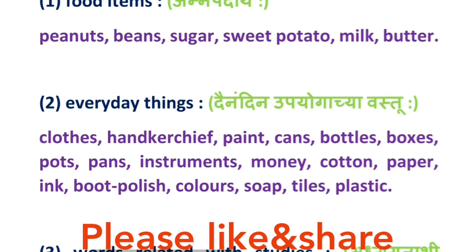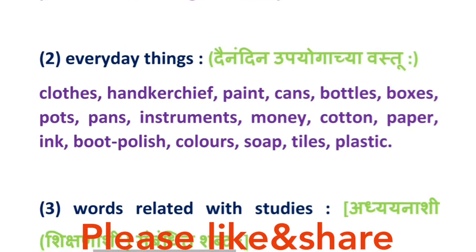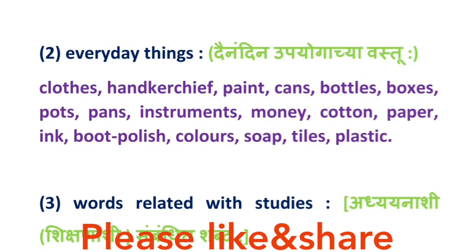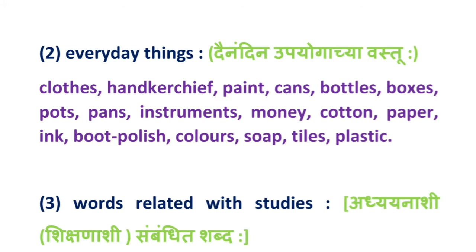Number 2: Everyday things — dayanindin upayogachya vastu. Jya madhe: cloths, handkerchief, paint, cans, bottles, boxes, pots, pans, instruments, money, cotton, paper, ink, wood polish, colors, sew, tiles, and plastic.